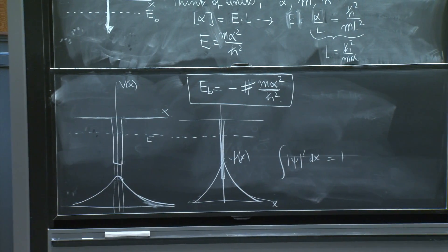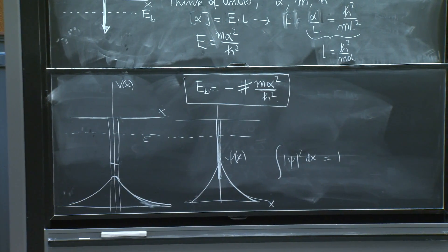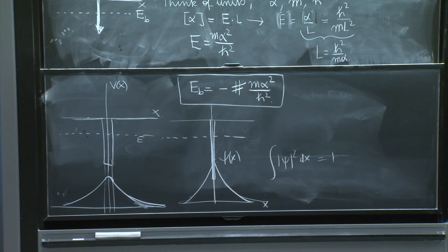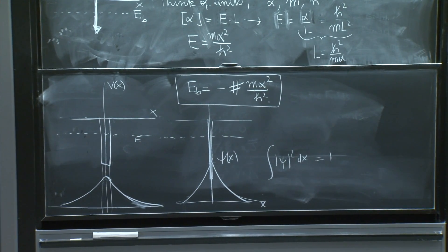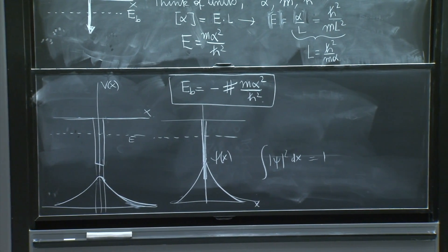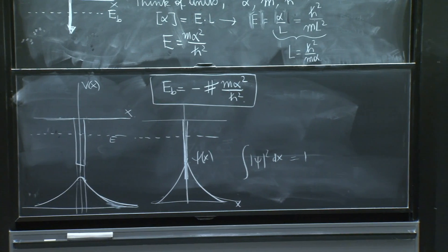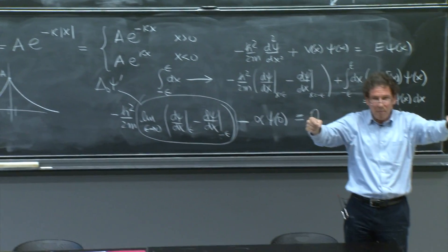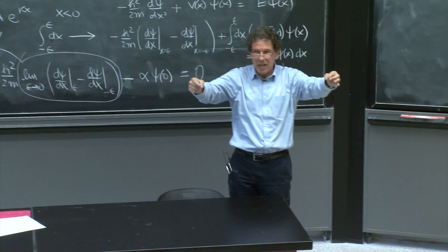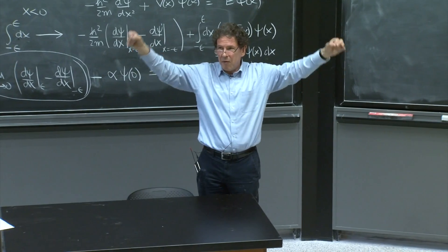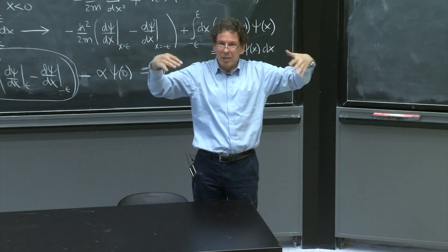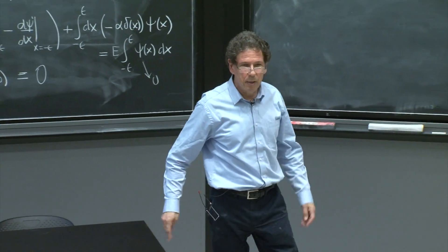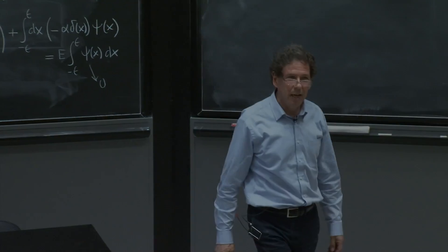This problem is instructive because you basically learn that with one delta function, you get one bound state. If you have two delta functions, you may get more bound states — three, four. People study those problems, and you will investigate the two-delta-function case.